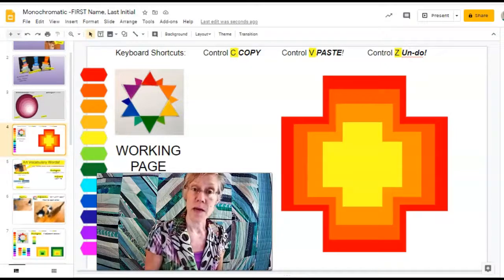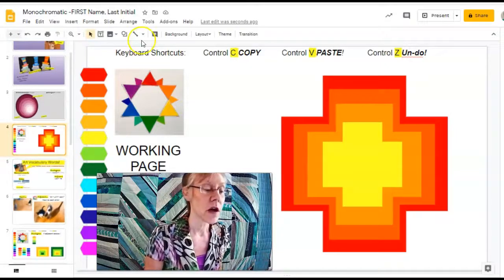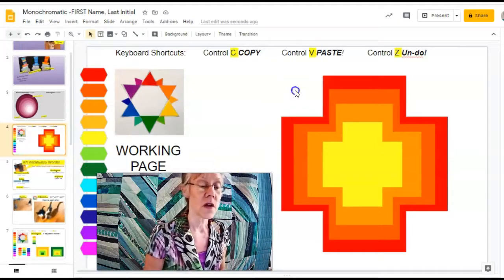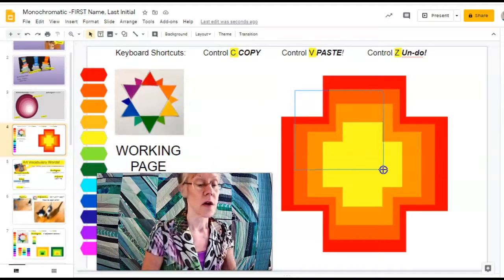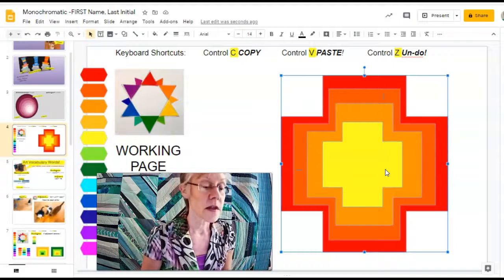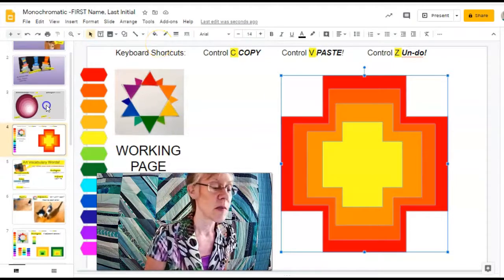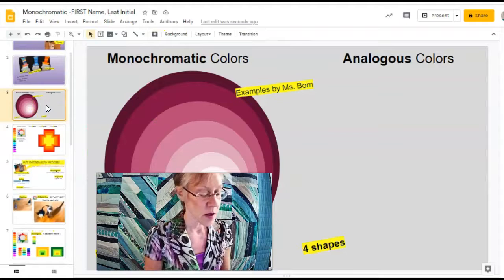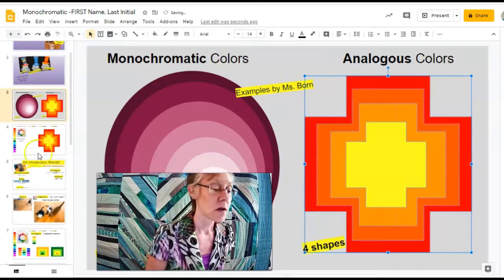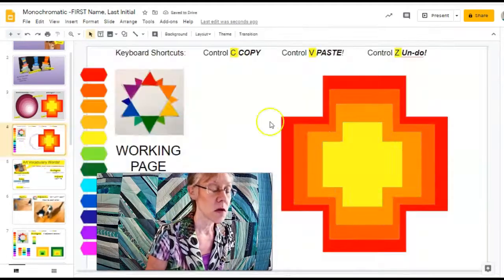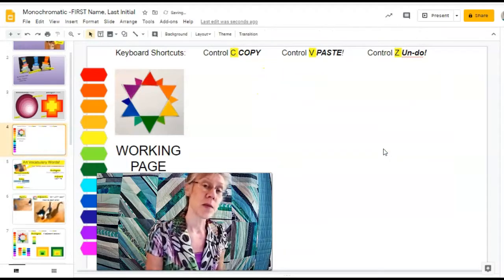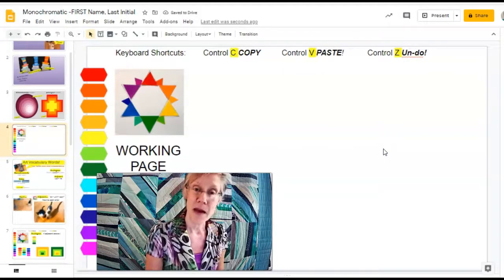I made this working page for you so you would have all the colors you need. After you finish the analogous picture, you drag across all the shapes. Control C to copy. Jump back to the project page. Control V to paste. Go back to my working page. And I can delete that to make room for the monochromatic picture.